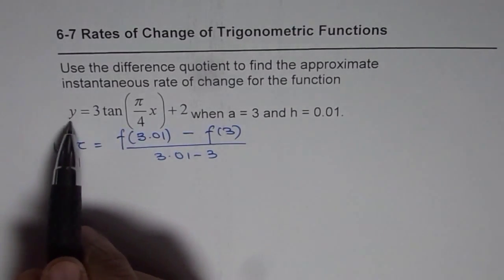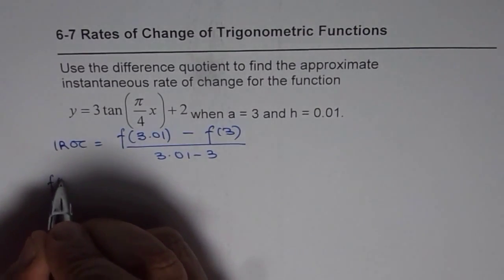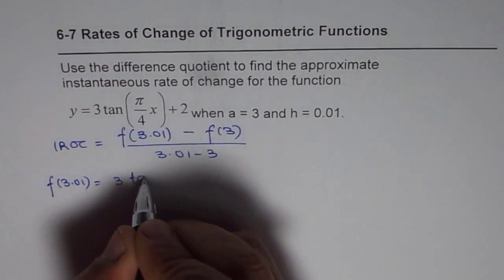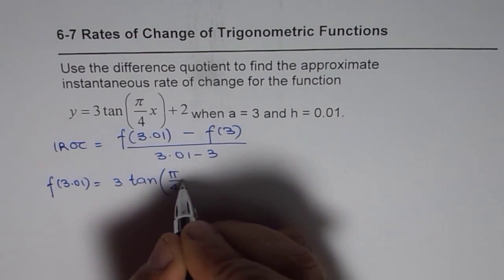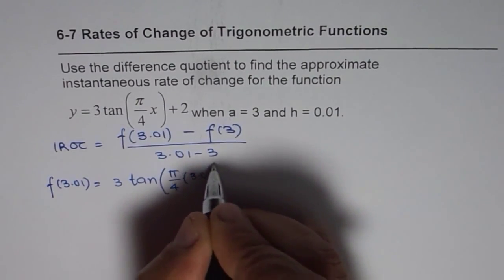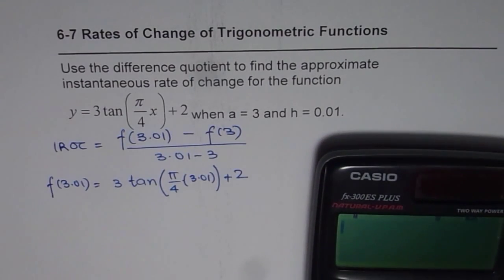So let's calculate the value of the function at 3.01 first. So f(3.01) is equal to 3 times tan(π/4 times 3.01) plus 2. We can use the calculator to calculate this value.